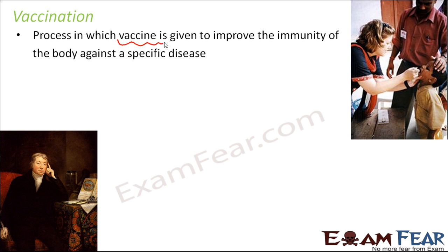A few terms need to be explained: what is vaccine and what is immunity? Immunity is our body's own defense system. Just as we employ security guards outside our house to protect it, our body also has a security system inside which helps protect against any sort of infections — that is called the immunity of the body. A person with strong immunity is less prone to infection, while a person with a weak immune system is more prone to fall ill and get attacked by harmful microorganisms.